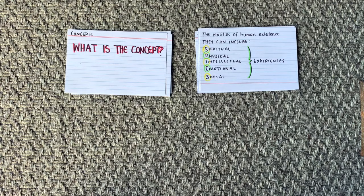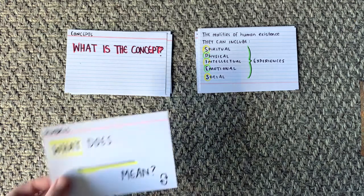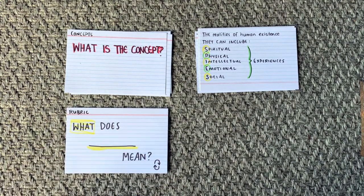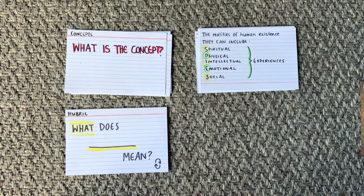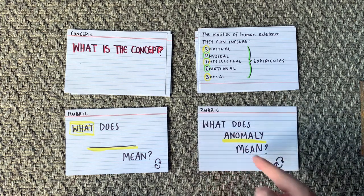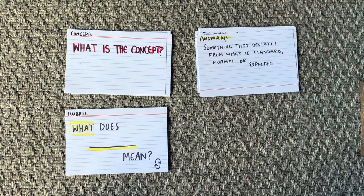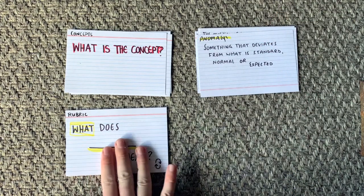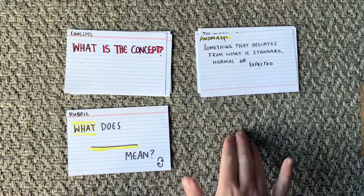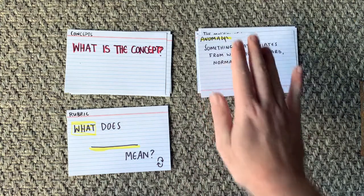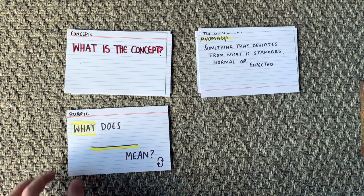After we talk about concept, we need to talk about the rubric — key rubric words and their meanings. We would repeat them, so for example: what does 'anomaly' mean? The answer goes on the back, and we repeat this step for as many key words that we need to understand and remember.